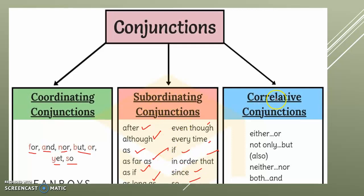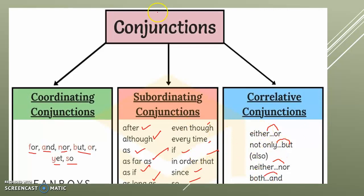The third type is correlative conjunctions. These come in pairs, because if one word comes, the other comes with it — like: either/or, not only/but also, neither/nor, both/and. These words always come in the form of pairs.